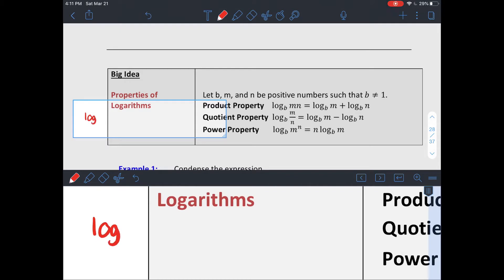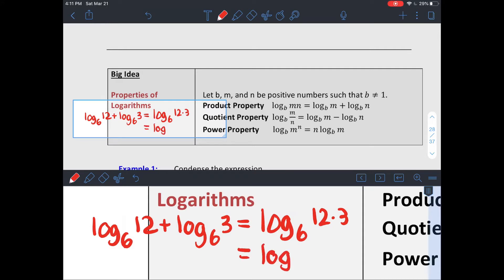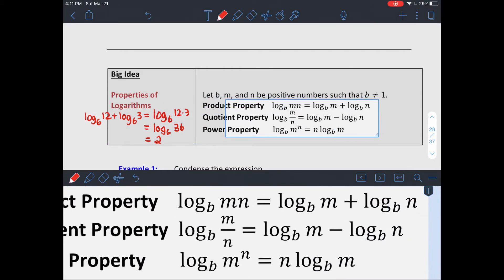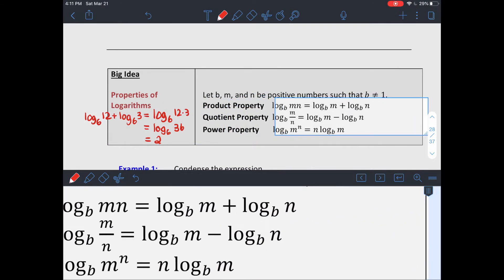So say you have an expression like log base 6 of 12 plus log base 6 of 3. Individually, you can't simplify those. But there's this property that says I can condense that back into log base 6 of 3 times 12, which 6 to the second gets me 36. So I could simplify that to just 2.